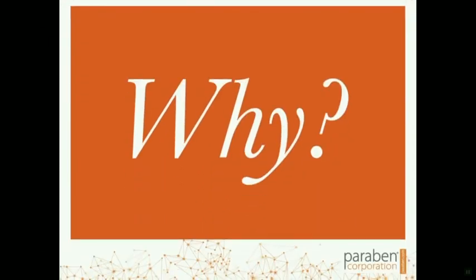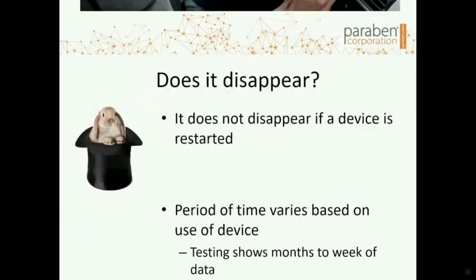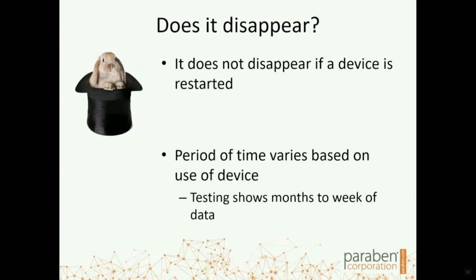So why is this valuable — why have a different perspective on your mobile forensics? The first area where this makes a big impact is vehicle forensics. Vehicle forensics can be a very difficult area since there are so many different vehicles, and many are not supported by vehicle forensic tools. This allows you to use the mobile device that was in the vehicle to gather information associated with an incident or a crash. A common question is: does this information disappear if the device is turned off before it gets to my lab?